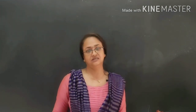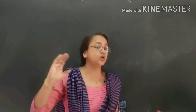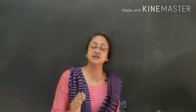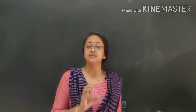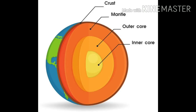Now we go straight to the structure of the earth. There are three parts: the lithosphere or crust is the first part, next comes the mantle, and deep inside is the core. Moving from the surface towards the center, temperature, pressure, and density all increase. Temperature increases at the rate of 1°C for every 32 meters. The density of materials in the core is much greater than that of rocks in the uppermost layers.